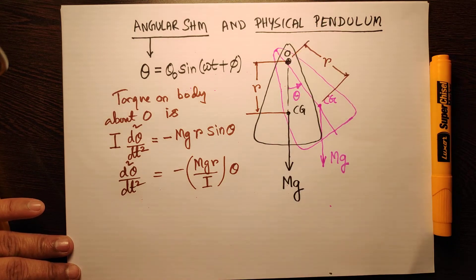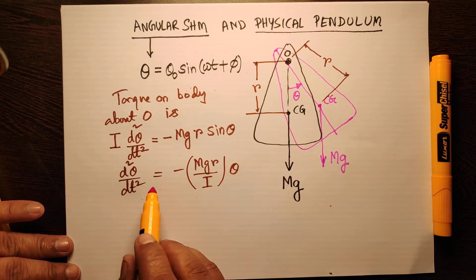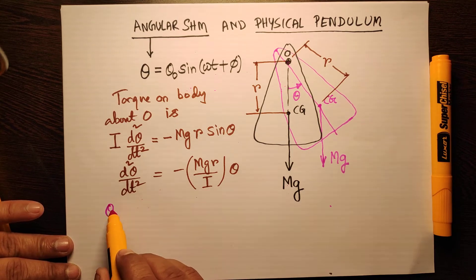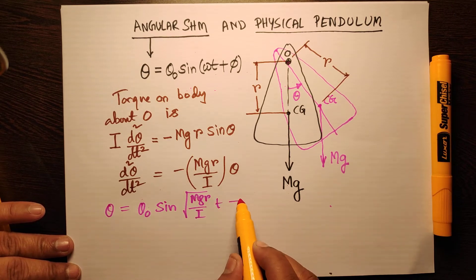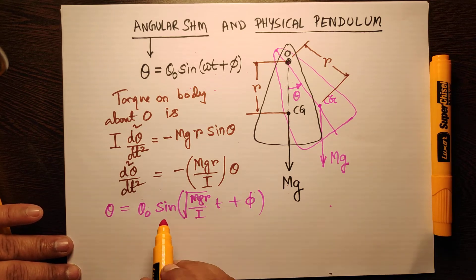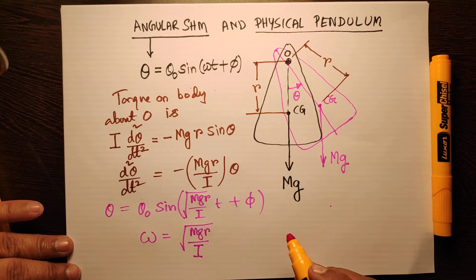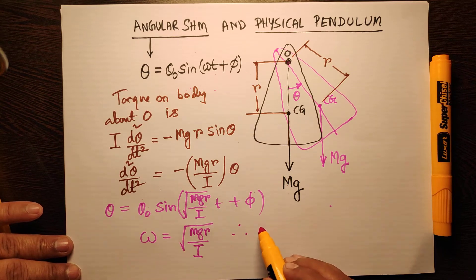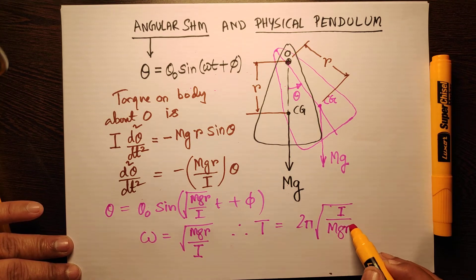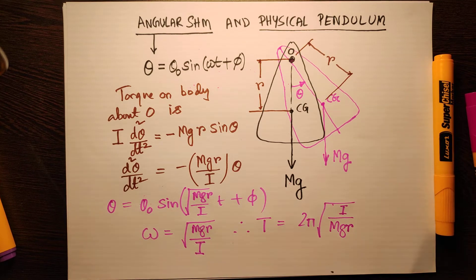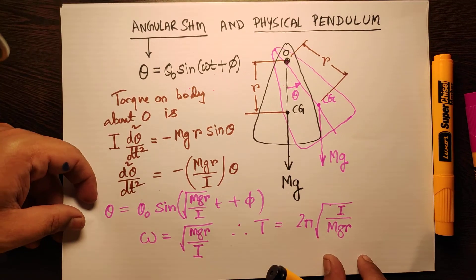This differential equation has the solution θ = θ₀·sin(√(mgr/I)·t + φ). The angular frequency of SHM is ω = √(mgr/I), and the time period is T = 2π·√(I/mgr). On the next page we will find the condition for the time period of oscillation of the physical pendulum to be minimum.